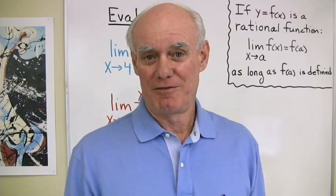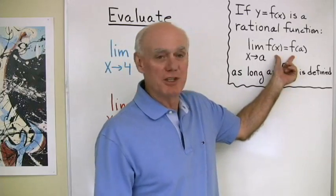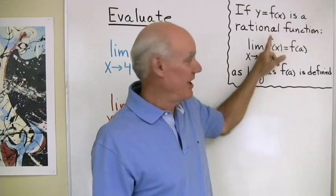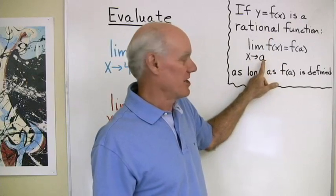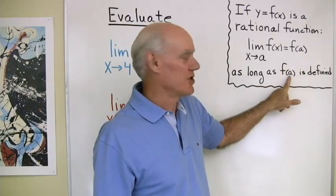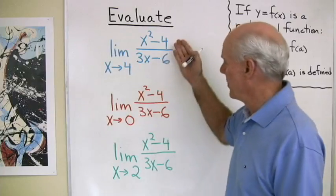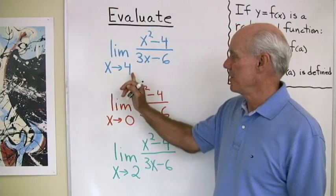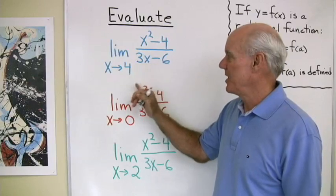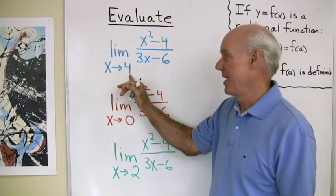Now we want to look at some limits that involve rational expressions. There's a theorem that says: if y = f(x) is a rational function, then the limit as x goes to a of f(x) is equal to f(a), as long as f(a) is defined. So when we evaluate these limits, we can simply substitute the number in for x, as long as the expression is defined for that value of x.